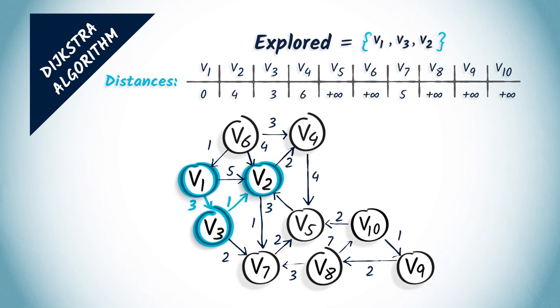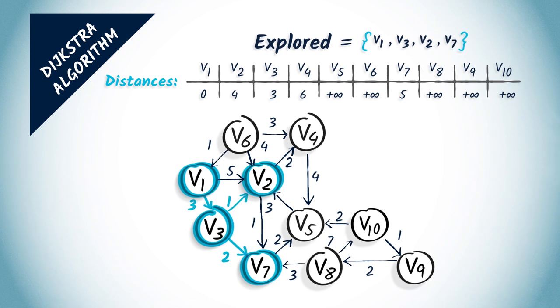A new iteration begins. We select v7 at distance 5 and add it to the list of explored vertices. And so on. Finally, we obtain the following spanning tree.